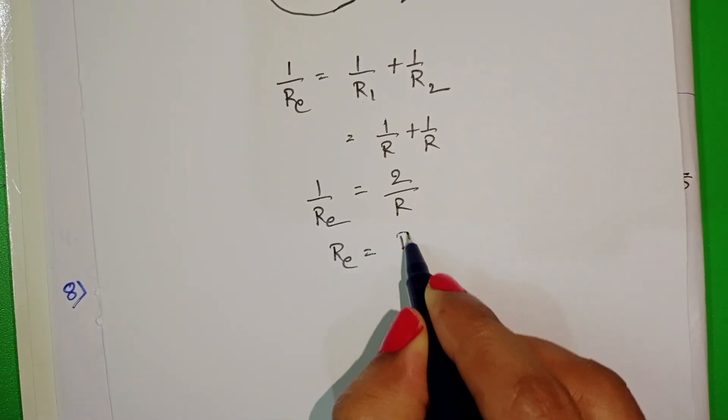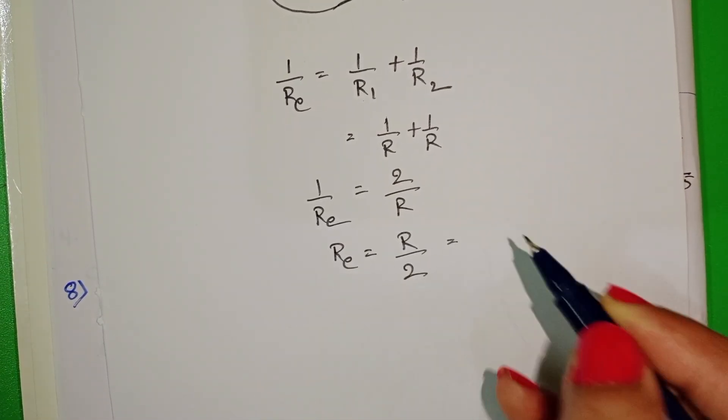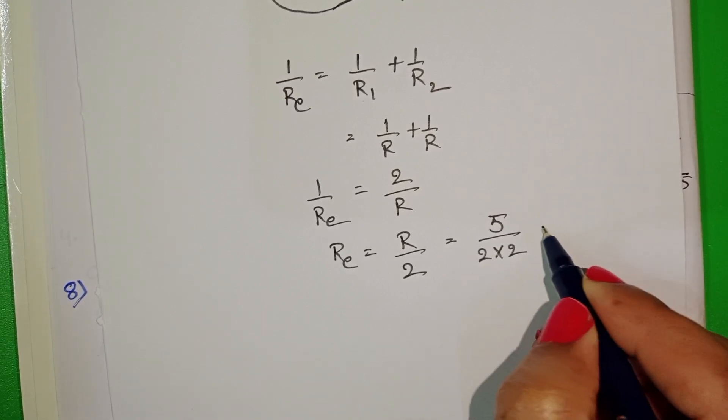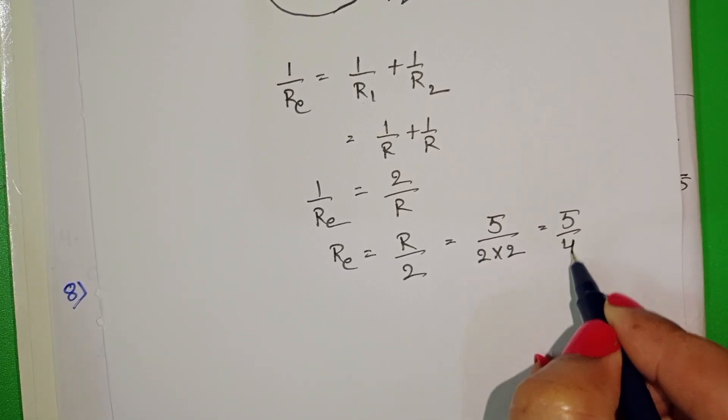R equivalent equals R by 2. So 5 by 2 divided by 2, which equals 5 by 4 ohm.